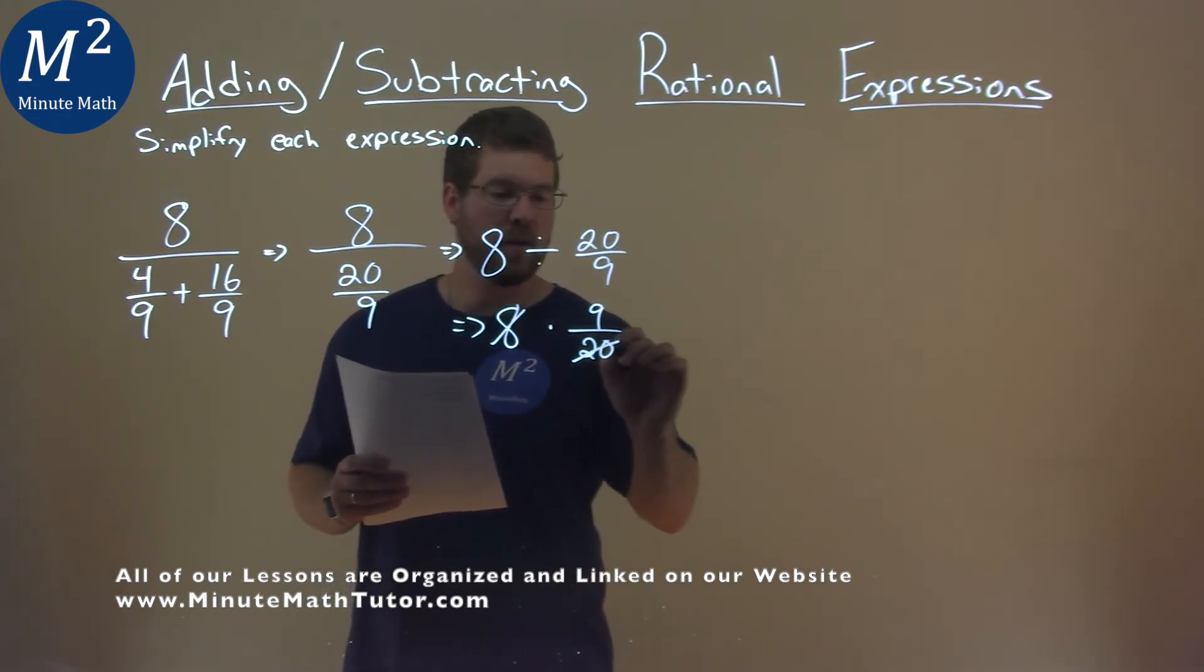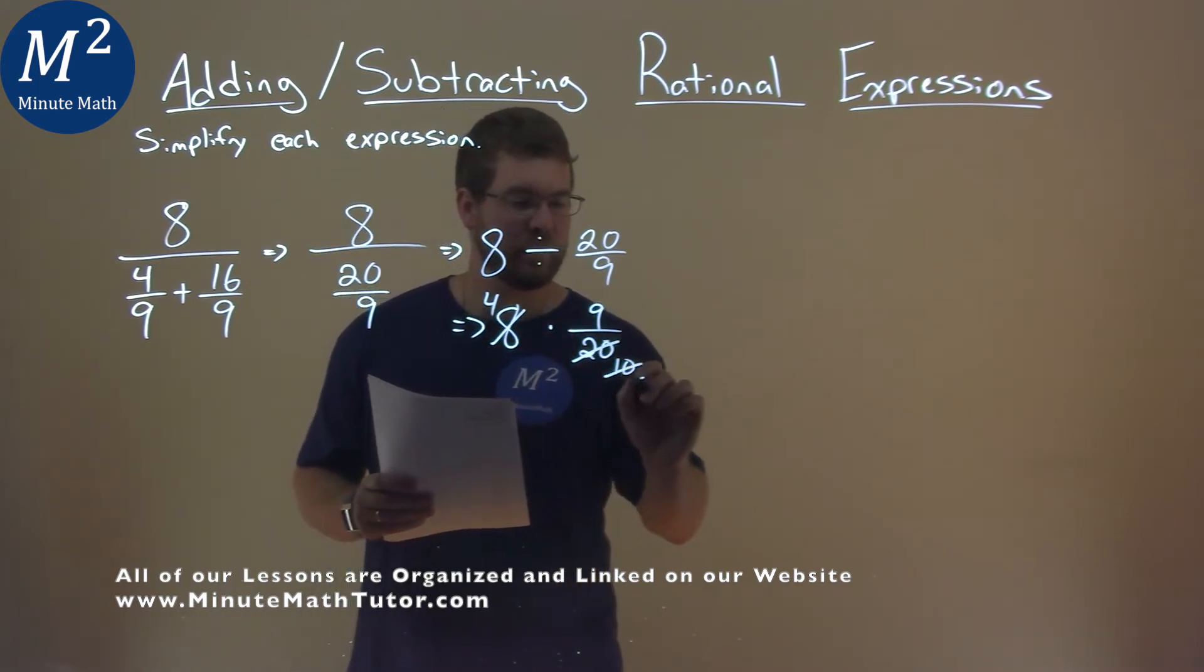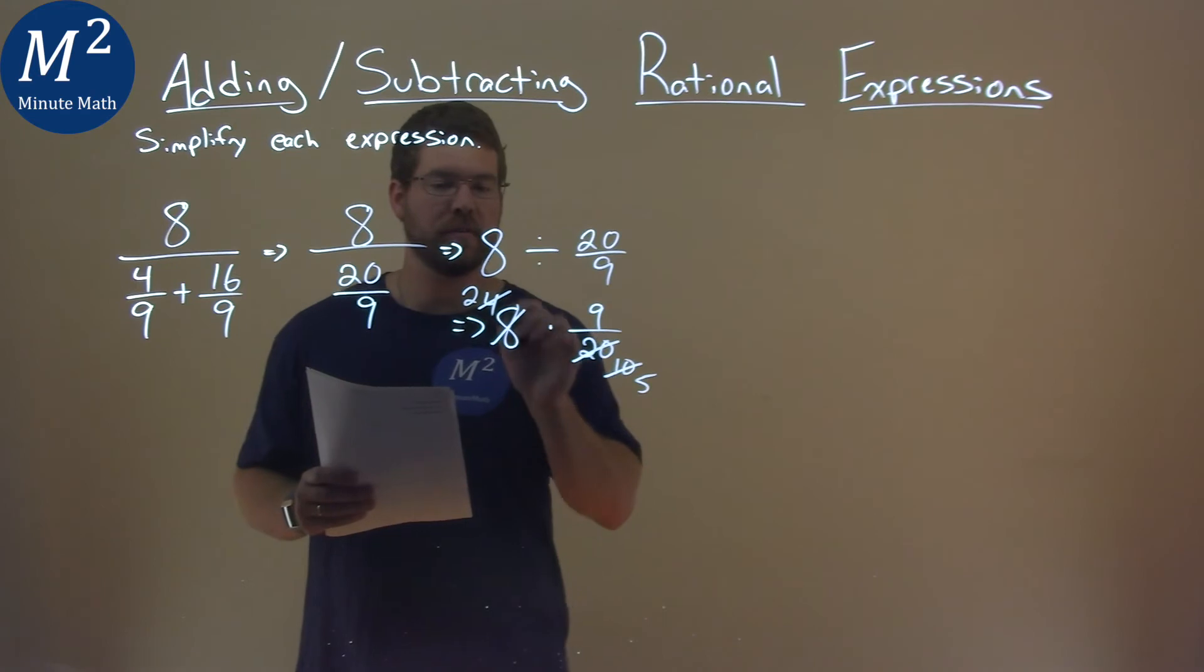8 and the 20, both are divisible by 2, so 8 becomes a 4 and 20 becomes a 10. Well, both divisible by 2 again, 4 becomes 2 and 10 becomes 5.